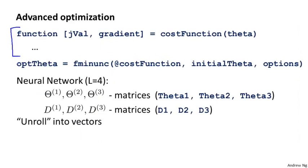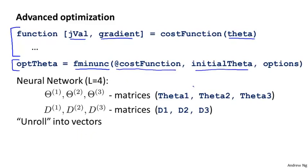Concretely, let's say you've implemented a cost function that takes your parameters data and returns the cost function and derivatives. You can pass this to an advanced optimization algorithm like fmin unc. All of these advanced optimization algorithms take as input a pointer to the cost function and some initial value of theta. These routines assume that theta and the initial value of theta are parameter vectors, maybe R^n or R^(n+1). It also assumes that your cost function will return as a second return value the gradient, which is also a vector of the same dimension.